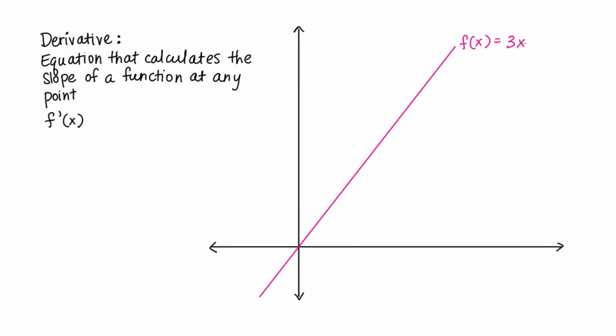Let's take a simple example. f of x equals 3x. From the last video, you should know that this is an equation for a line that has a slope of 3 and a y-intercept of 0. At any point on this line, the slope is always the same, which is 3. So in this case, the derivative, f prime of x, is just 3.